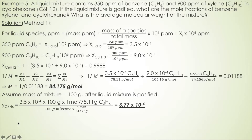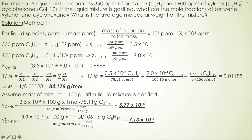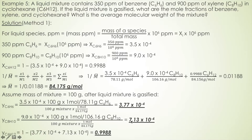Performing the same calculation for xylene: mass fraction of xylene (9.0 × 10⁻⁴) times 100 g, divided by the molecular weight of xylene, then divided by the total moles of mixture (100 g divided by average MW), gives a mole fraction of xylene of 7.13 × 10⁻⁴. The mole fraction of cyclohexane is simply 1 minus the sum of the other two mole fractions, giving 0.9988. That is the final answer from Method 1.